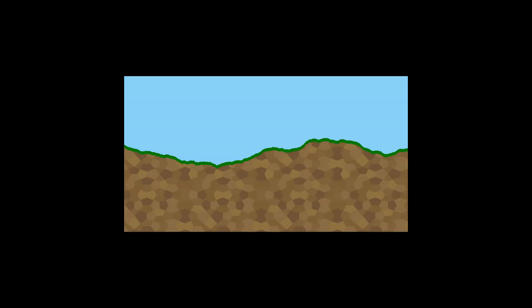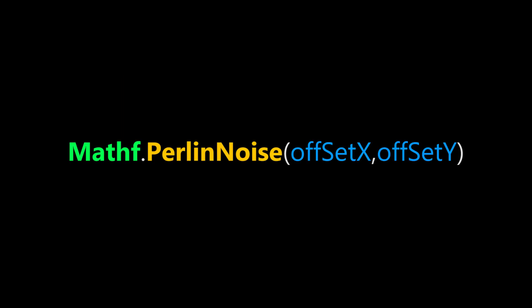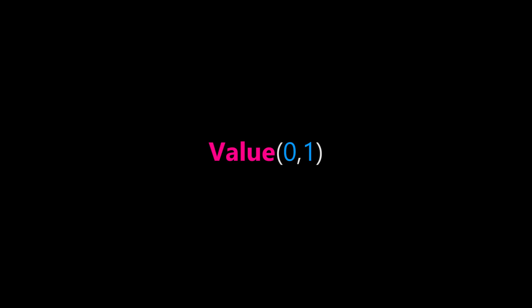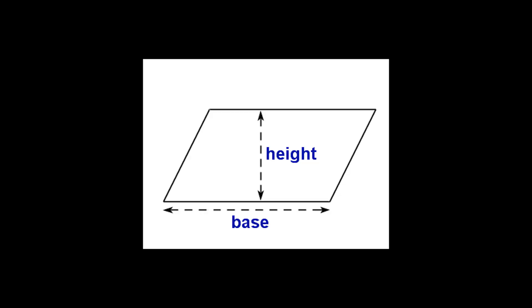The first step was to make a terrain that is generated by code. I used a line of code called Mathf.PerlinNoise, and this chooses a point on the Perlin noise texture based on the offset you give it. I gave the offset the position of each vertex on the terrain, and it gives a value between 0 and 1 which I used to determine the height of the terrain.